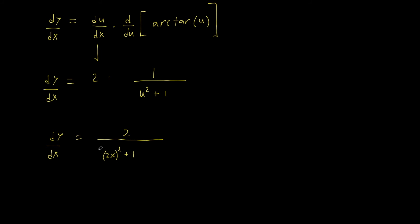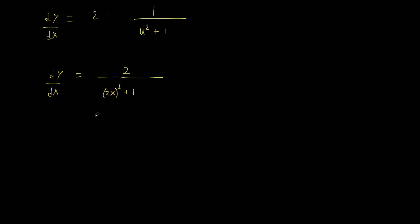And let's actually take one more line and multiply out this exponent. So we have dy/dx equals 2 over 4x squared plus 1, and we are finished.